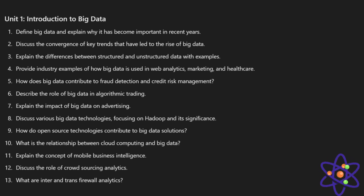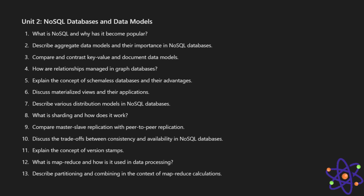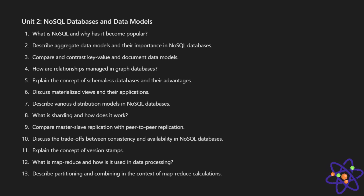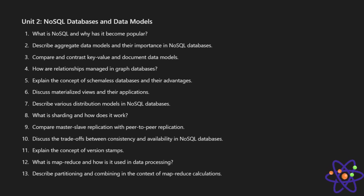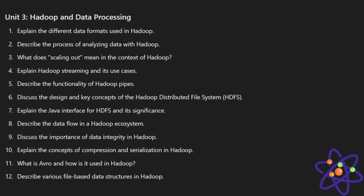The second unit covers NoSQL databases and data models. You will learn about NoSQL database technologies like MongoDB, the importance of NoSQL, schema-less databases and their advantages, MapReduce functions, trade-offs between consistency and availability, various distribution models in NoSQL databases, and materialized views and their applications. These are the important topics and questions from this chapter.